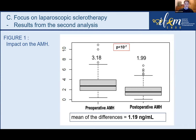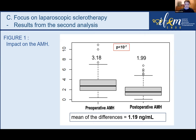The first key result: we published a mean pre- to postoperative AMH difference of 1.3 ng/mL; the updated data shows 1.19 ng/mL, with a preoperative mean of 3.18 and postoperative mean of 2.0 ng/mL. There is a measurable impact of the technique on AMH. We can now put a number on it, even if we cannot yet fully determine the effect on true ovarian reserve.